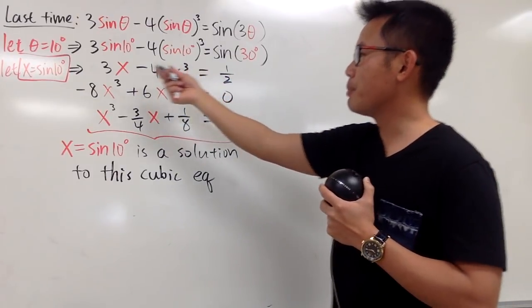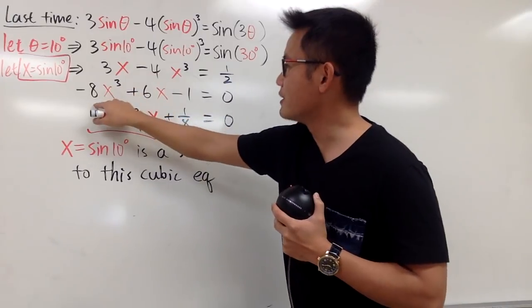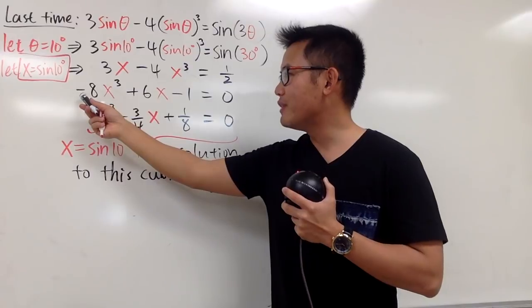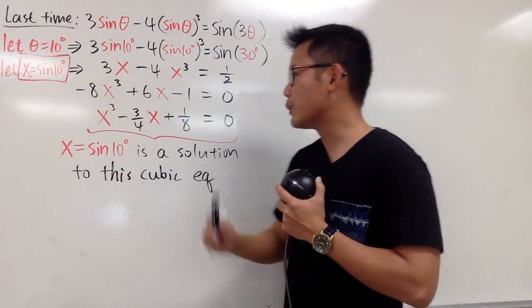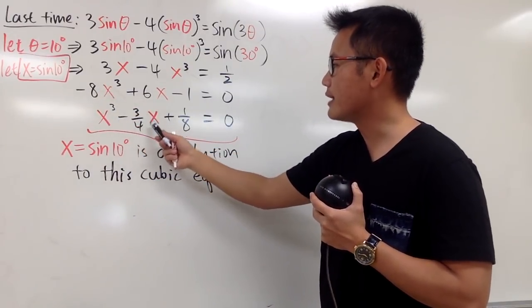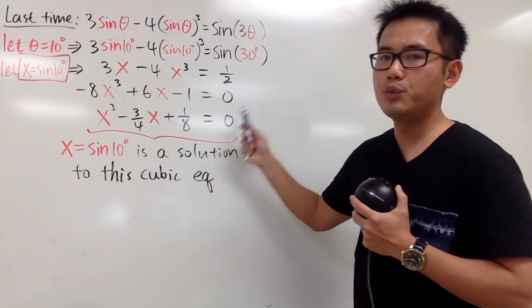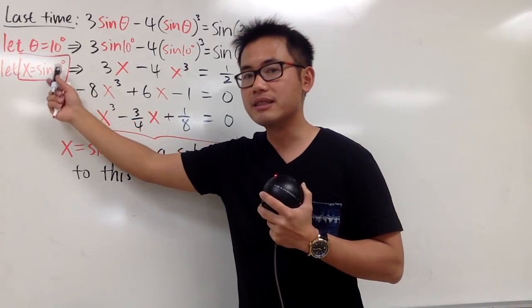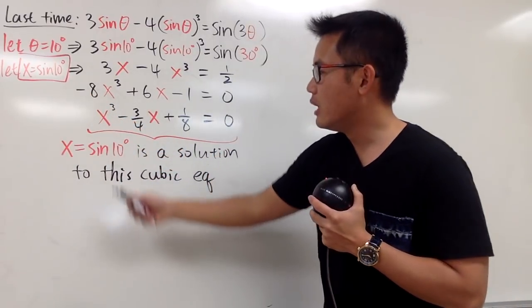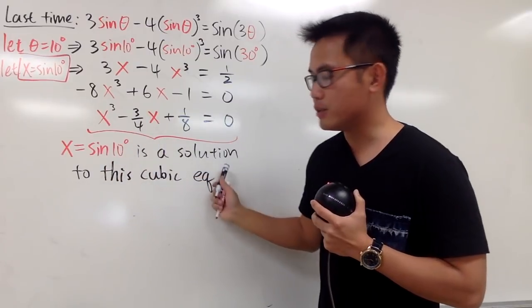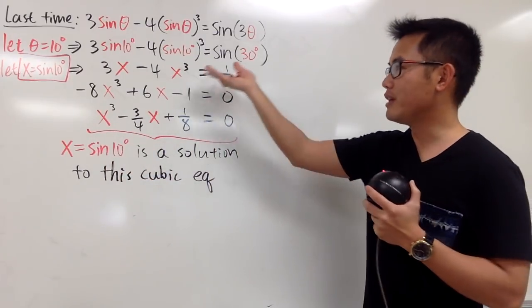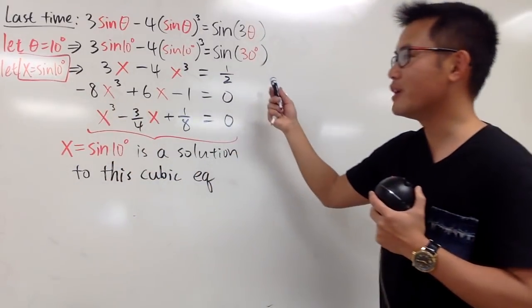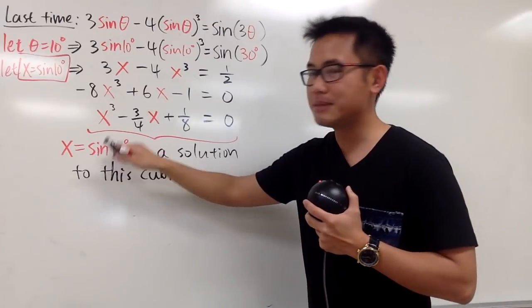Let's multiply everything by 2, then move terms to the other side, and divide everything by negative 8. We end up with x³ minus 3/4 x plus 1/8 equals 0. Even though we don't know the exact value of sine of 10 degrees, we do know sine of 10 degrees is a solution to this cubic equation, because we made it to be the case — we let x equal sine of 10 degrees and came up with this equation.